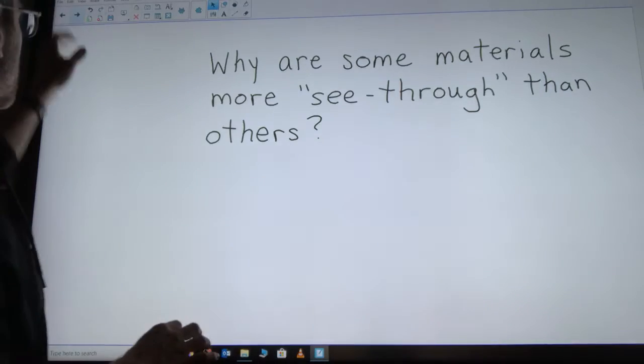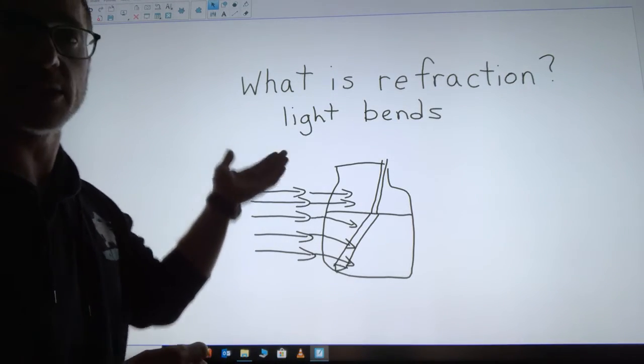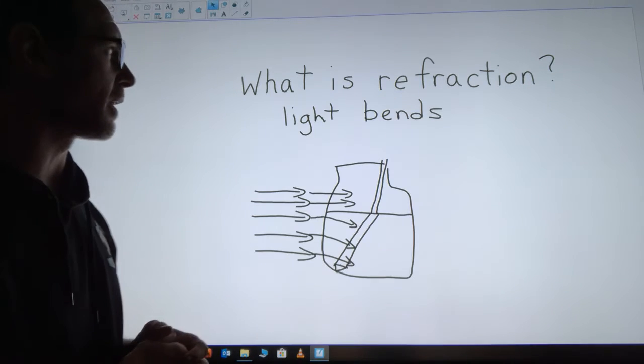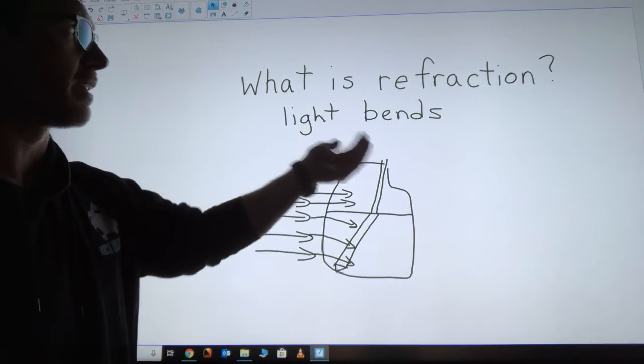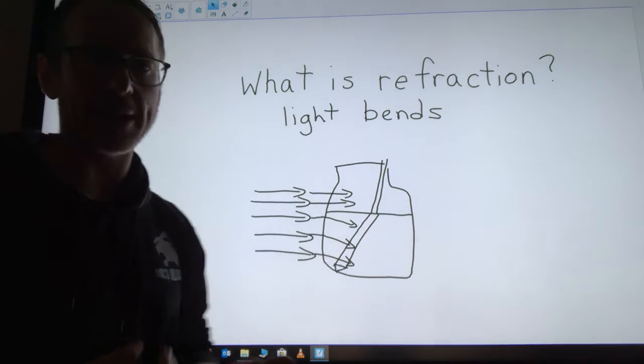Now with some transparent materials they will change the light and have an effect on it. They'll actually cause the light to bend. Our scientific word for light bending is the word refraction, and refraction just means bending.